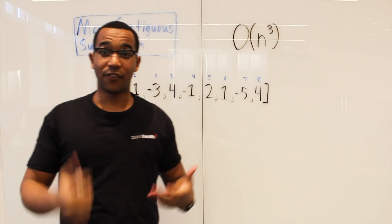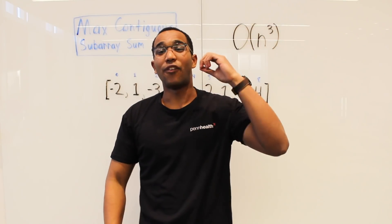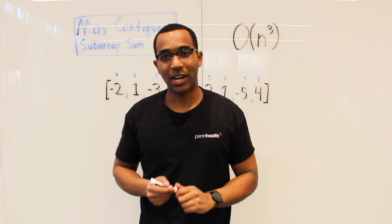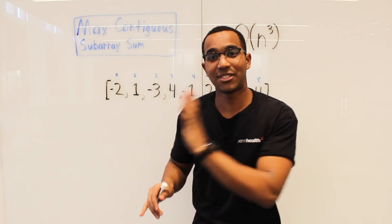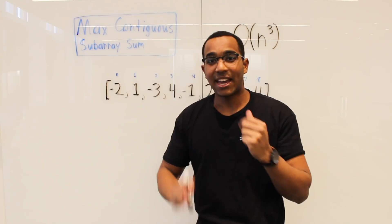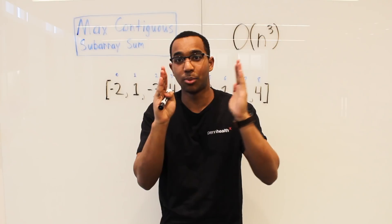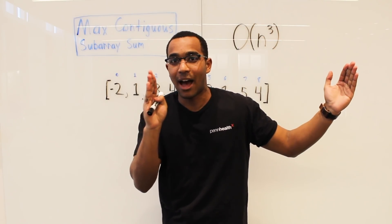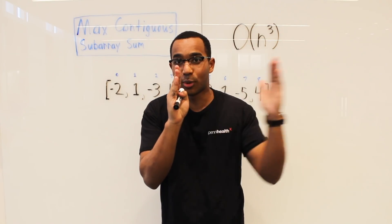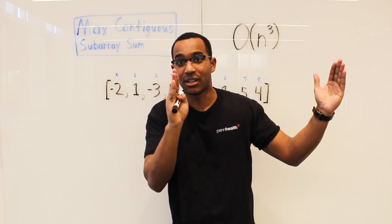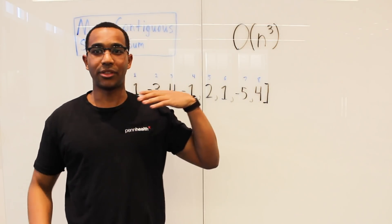For the first approach, we explore all of the contiguous subarrays. I plant myself at the first item — I have a left and a right — and I explore. I plant at a left, explore a window, explore all the windows to the end. When I hit the end, I close the left and bring the right back. Then I keep exploring, hit the end again, close in the left, and bring the right back. That is our approach to look at all of the windows.